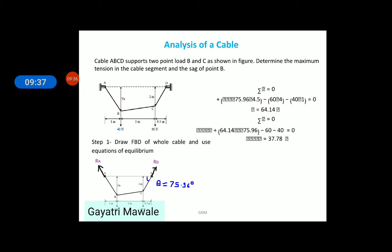Angle of DC portion with respect to horizontal is tan inverse of 2 upon 0.5. So, this gives angle theta here as 75.96 degree. Let us use first equation of equilibrium for this FBD which is summation moment about A point equals to 0.